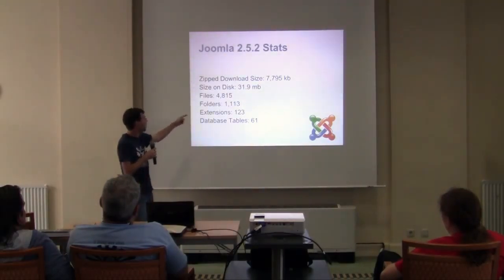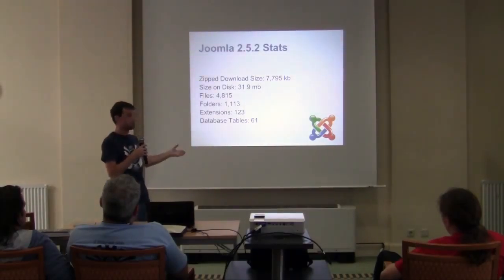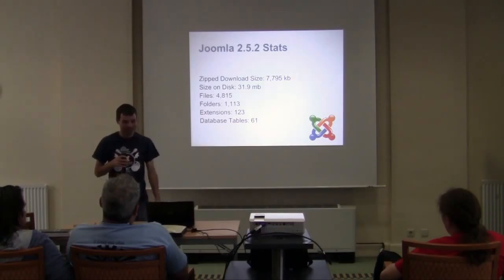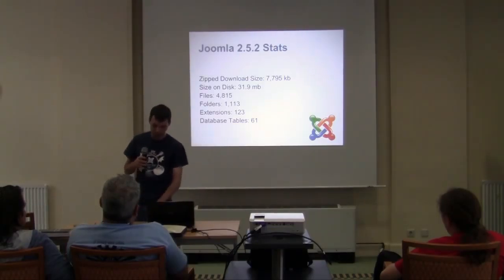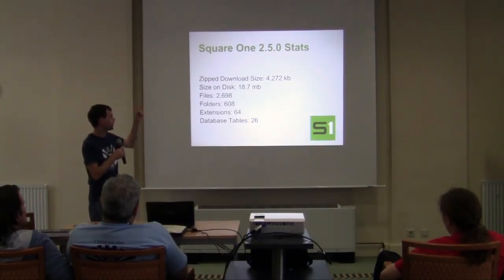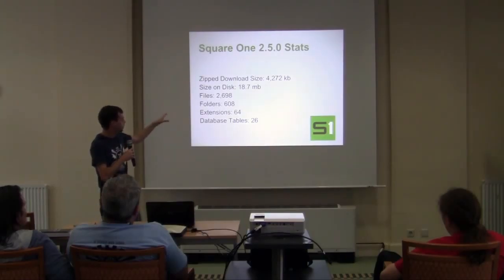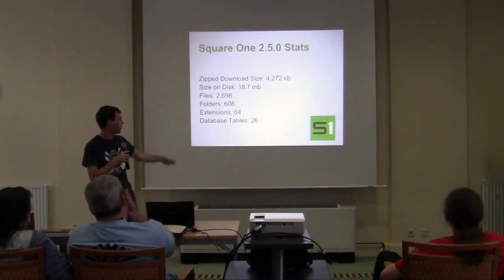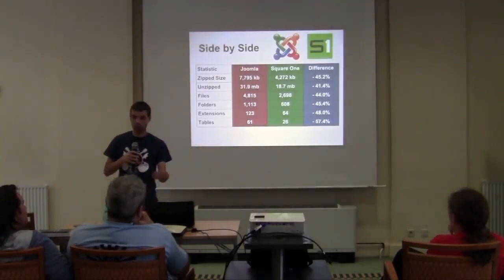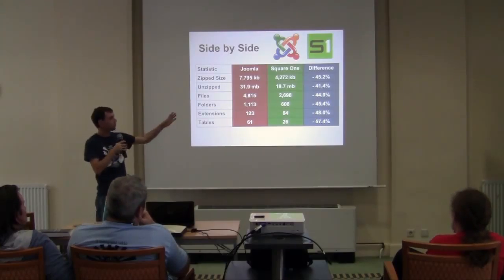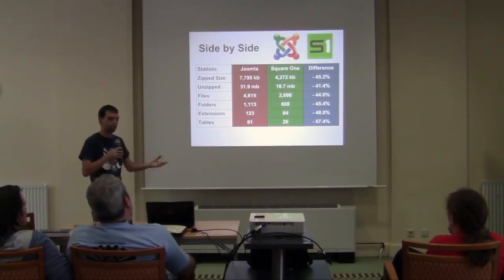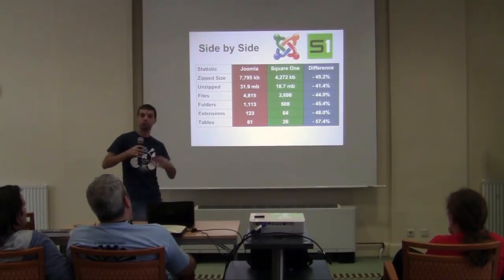And there are a lot of database tables — smart search alone accounts for 26 or 27 of them. That number is a lot of extra tables compared to previous versions. Square One: just over 4 megabytes, about 19 when you unzip, only about 2,600 to 2,700 files, a lot fewer folders, only 64 extensions, and 26 database tables. Side by side, we're looking at a 40 to 50 percent difference in metrics. These are largely file sizes because I removed extensions. Database tables are also reduced — we don't need the web links table if web links is not installed.